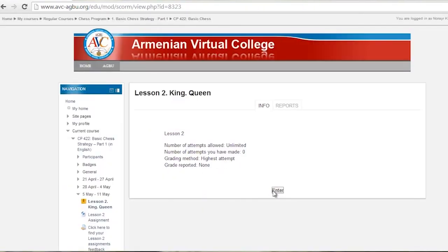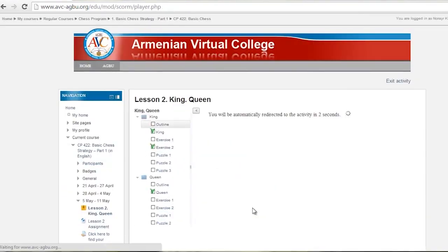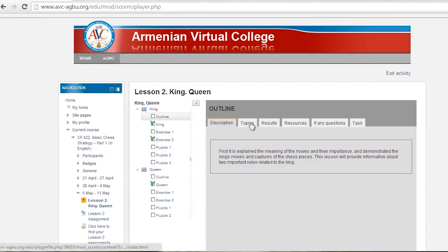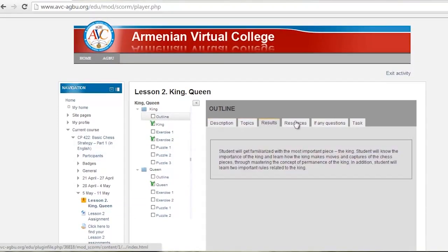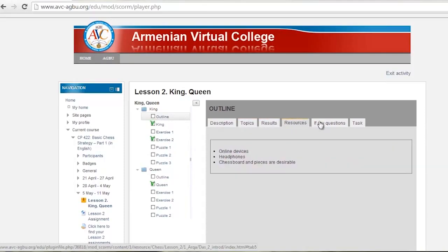Now we are in the chess lesson. The outline of the lesson includes description, topics, results, resources, frequently asked questions, and task sections.